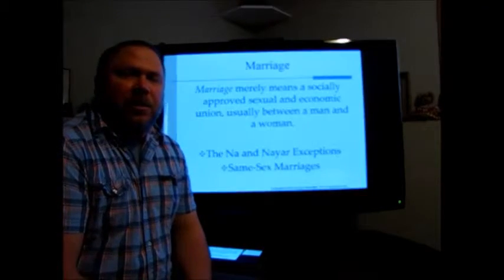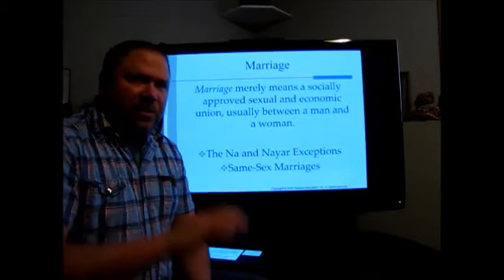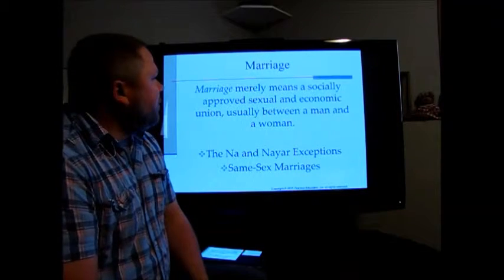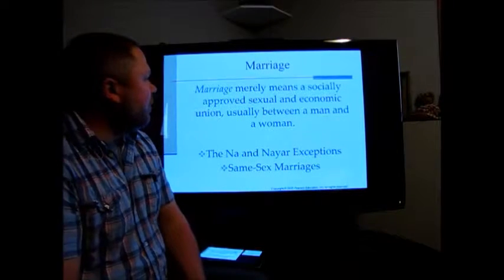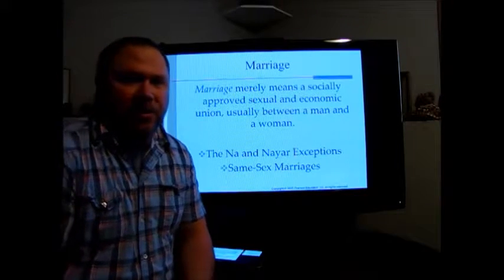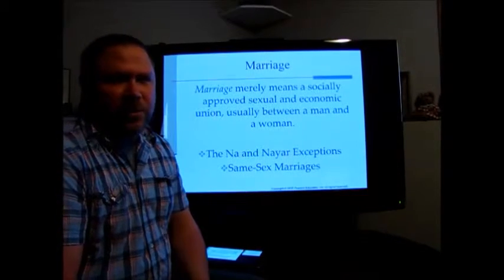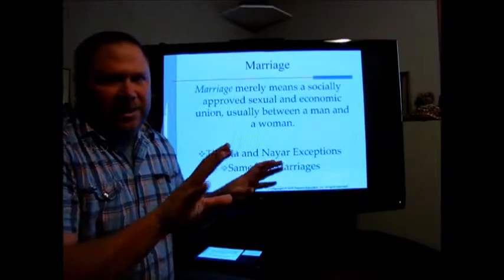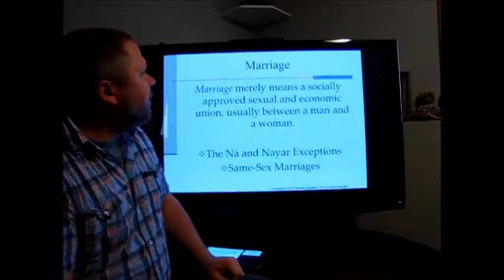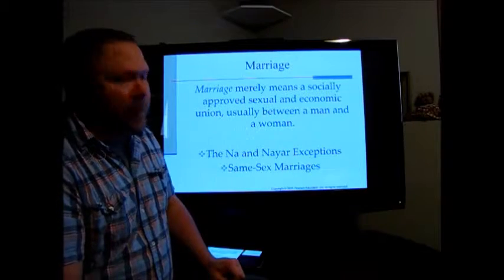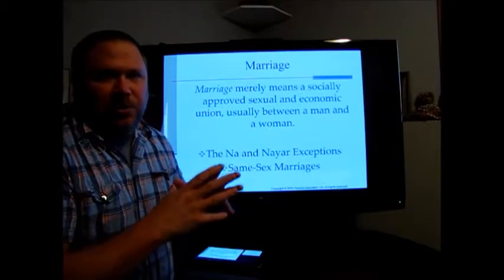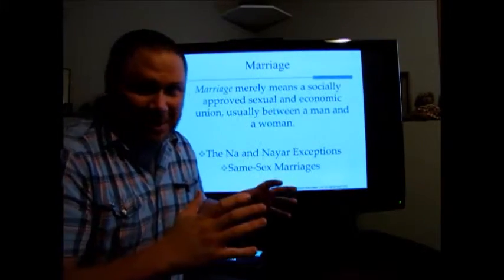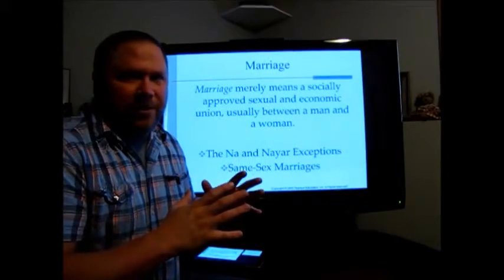The book will start off with the author's definition of marriage. According to our textbook, marriage is a socially approved sexual and economic union, usually between a man and a woman. The things to focus on here are: one, socially approved — so it's something that the rest of the group recognizes and approves — and the other part is sexual and economic union.